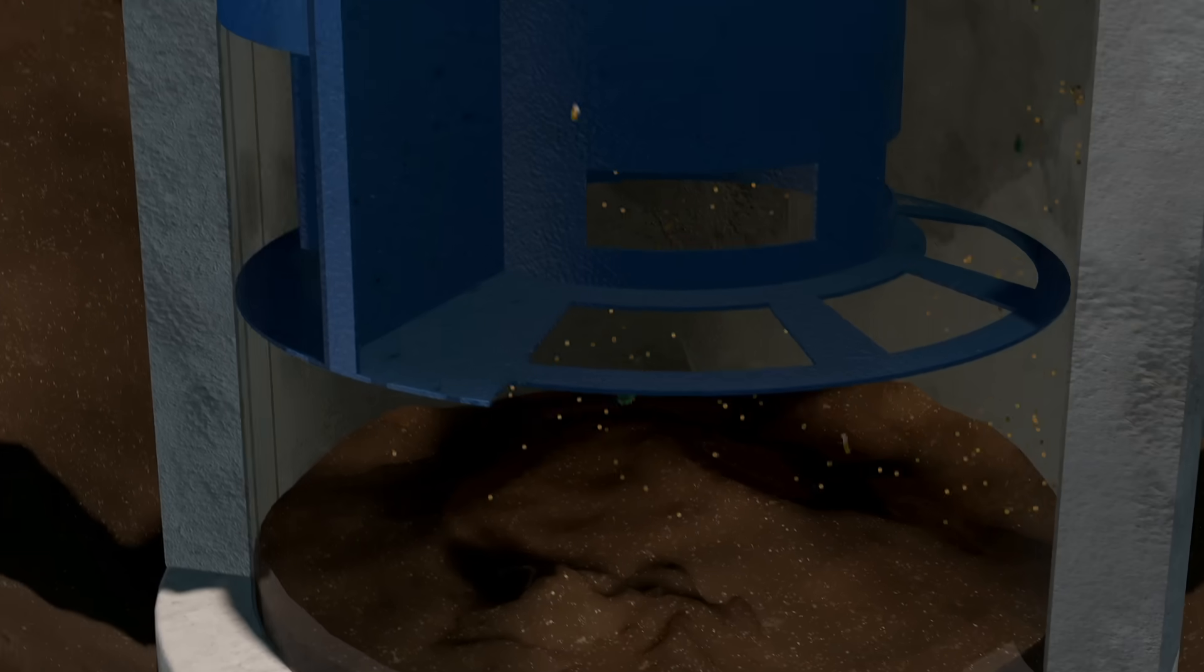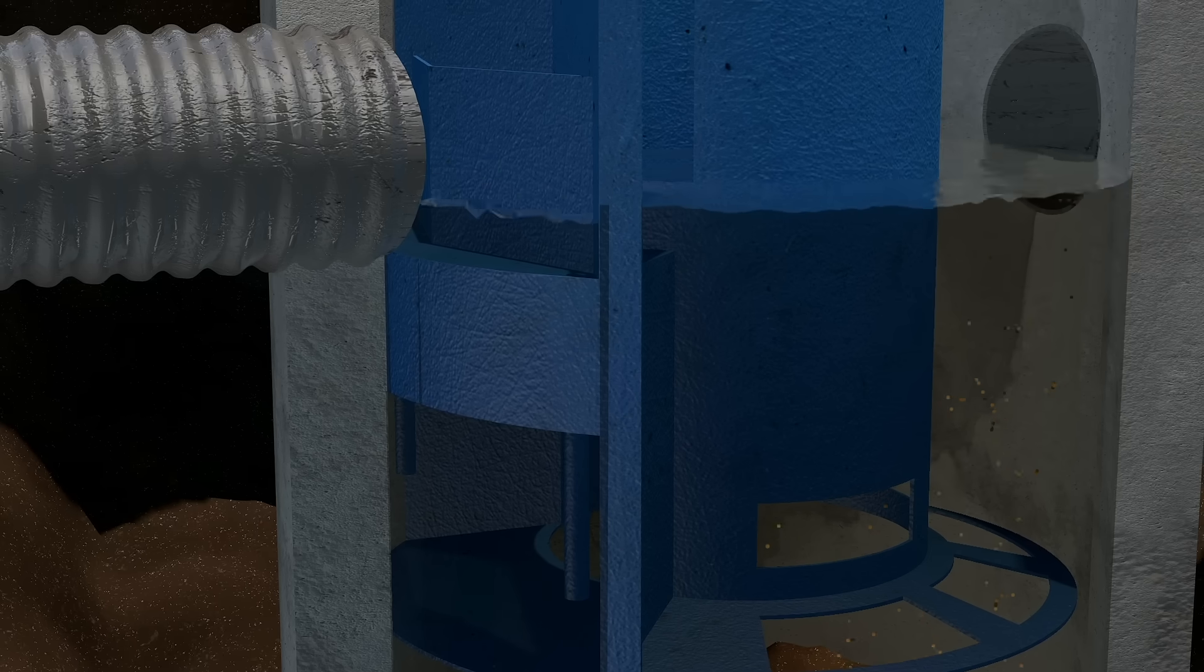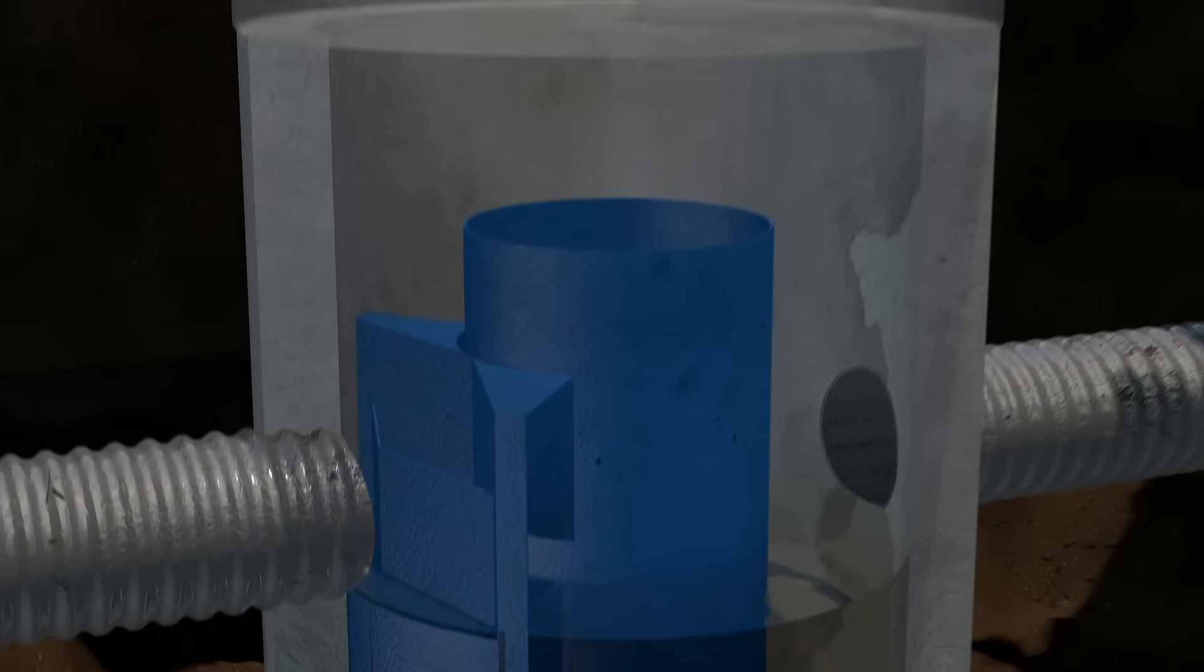After the storm event subsides, two drain down pipes allow the water surface elevation inside the structure to fall until it reaches the outlet pipe invert elevation. Because all material is contained within the sump and center cylinder,